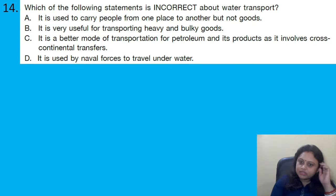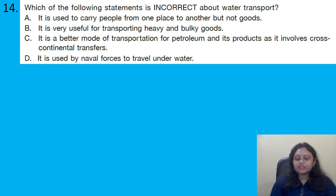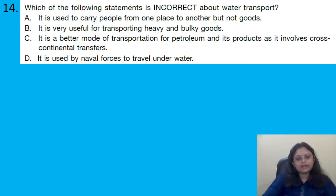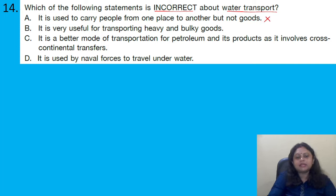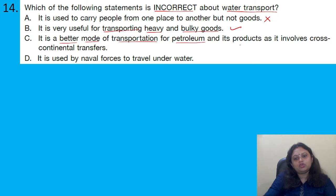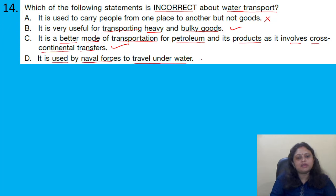Which of the following statements is incorrect about water transport? Option A: it is used to carry people from one place to another but not goods — this is incorrect, as water transport carries both people and goods. Option B: useful for transporting heavy and bulky goods — correct. Option C: better mode for petroleum transport involving cross-continental transfers — correct. Option D: used by naval forces to travel underwater — correct. So the correct answer is option A.